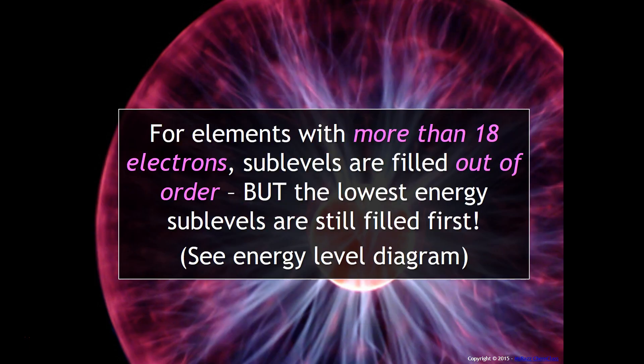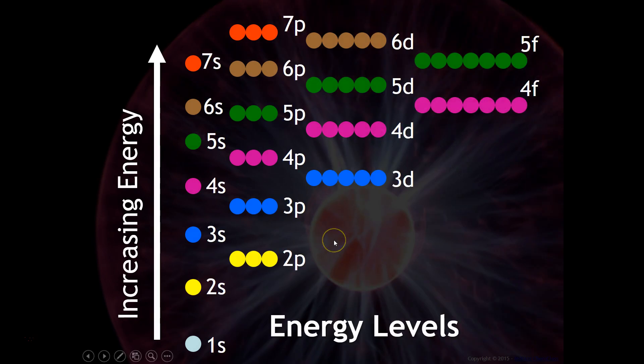For elements with more than 18 electrons, sublevels actually turn out to be filled out of order. But fortunately, the lowest energy sublevels are still filled first. So there's an energy level diagram for you to take a look at.